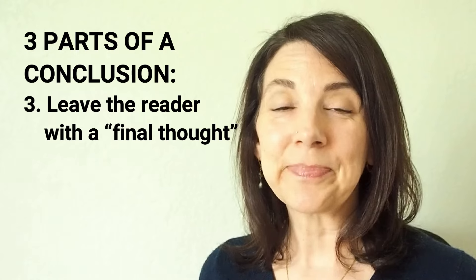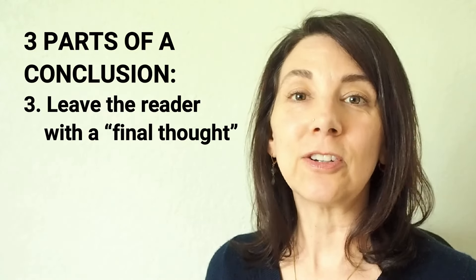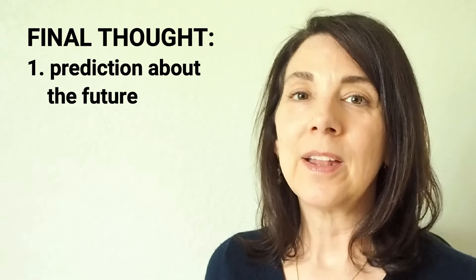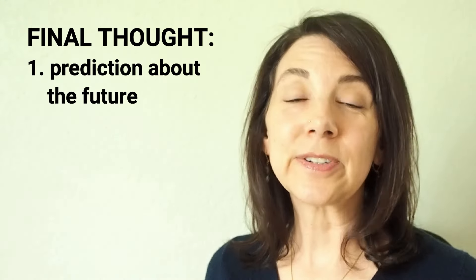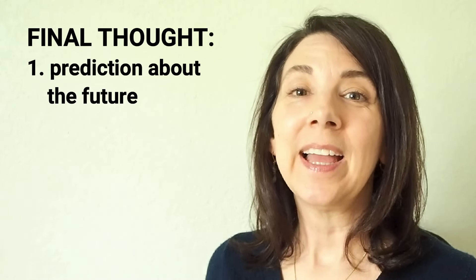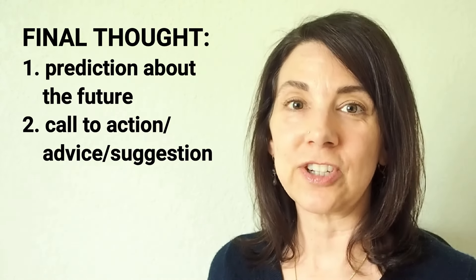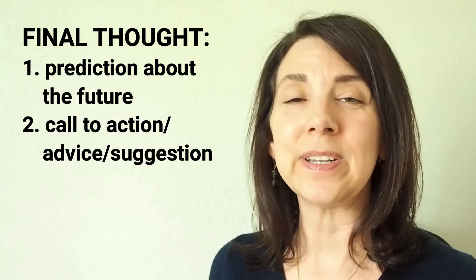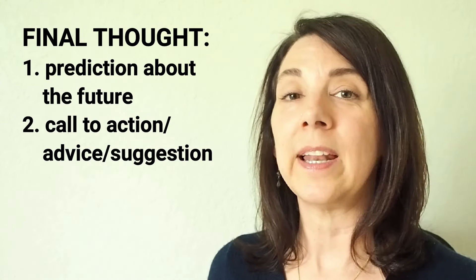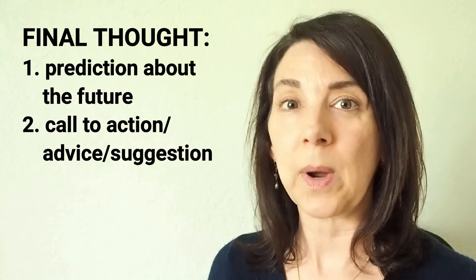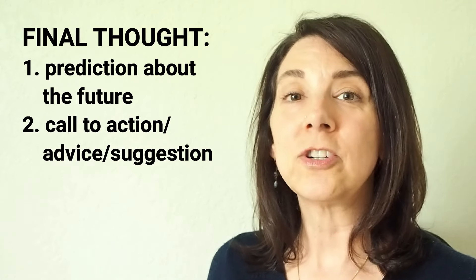Next, number three — this is what we usually call the final thought. The final thought can look like one of the following. Number one, it can be a prediction about the future — give the reader something to think about related to your topic in the future. Number two, a call to action or a suggestion: what should the reader do now that he or she has read your essay? This is a very common way that we conclude an argumentative essay. If we try to persuade someone about a topic, the conclusion might give a call to action.